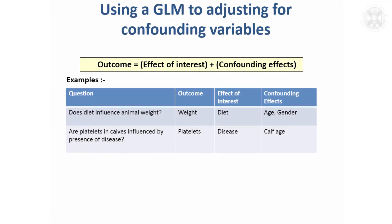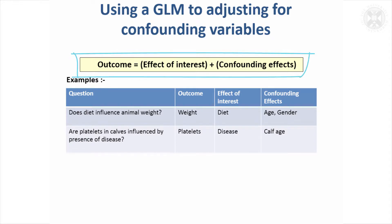We looked at general linear models with continuous effects where we were adjusting for pre-treatment values. Sometimes there might be confounding values, sort of measurements, that it's useful to adjust for. And in that case, you would fit both your effect of interest and any confounding effects in the model.